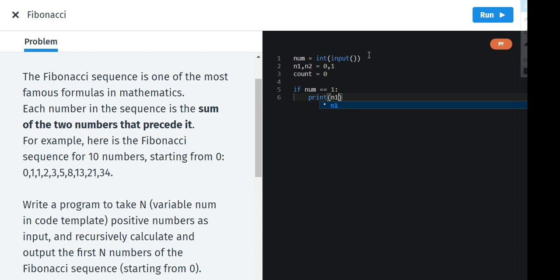And now comment down below what is the value of n1. Now let's leave a block again and start. Now we are going to use the while loop right here. While count is less than num, how is count less than num?